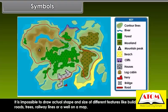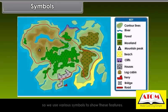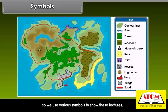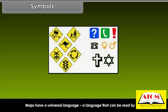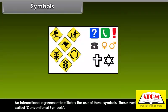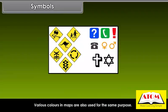It is impossible to draw the actual shape and size of different features like buildings, roads, trees, railway lines, or a well on a map. So we use various symbols to show these features. With the help of these symbols, we can draw maps and read them easily. Maps have a universal language — a language that can be read by all. An international agreement facilitates the use of these symbols, which are called conventional symbols. Various colors in maps are also used for the same purpose.